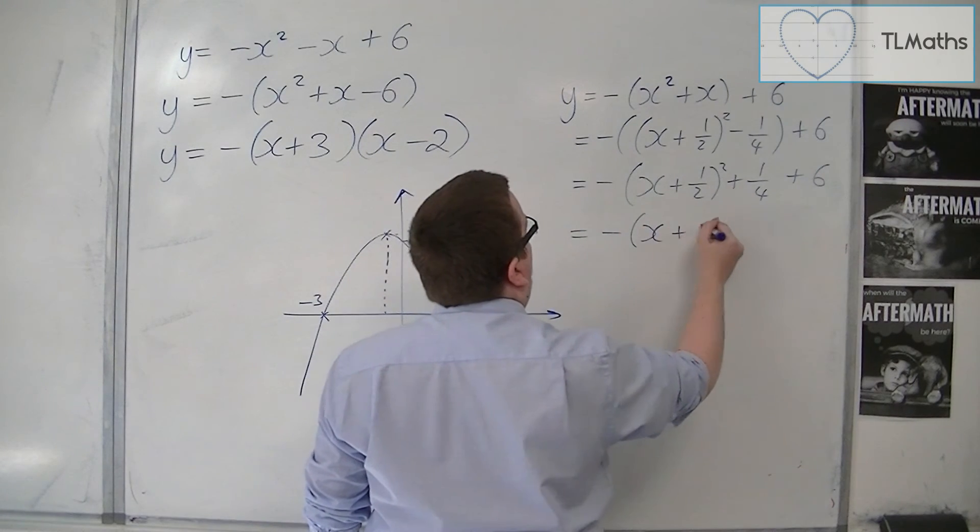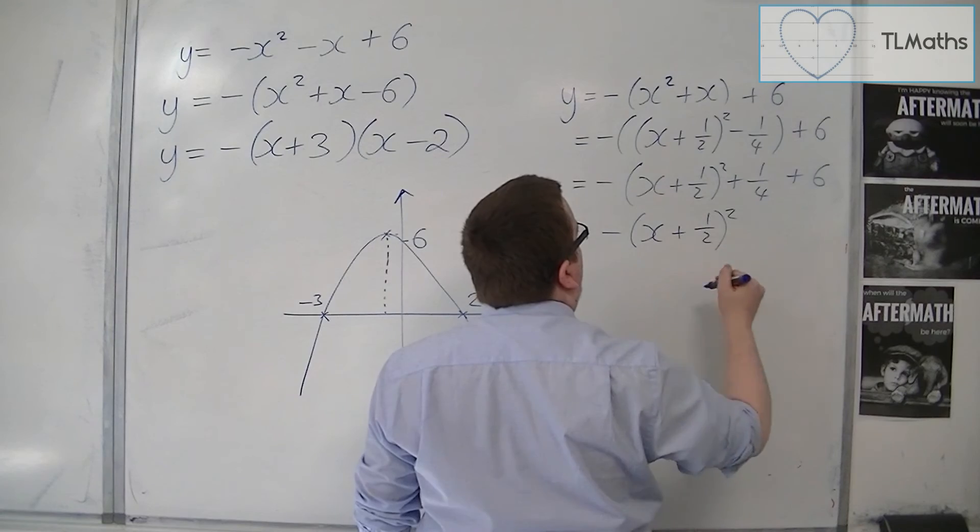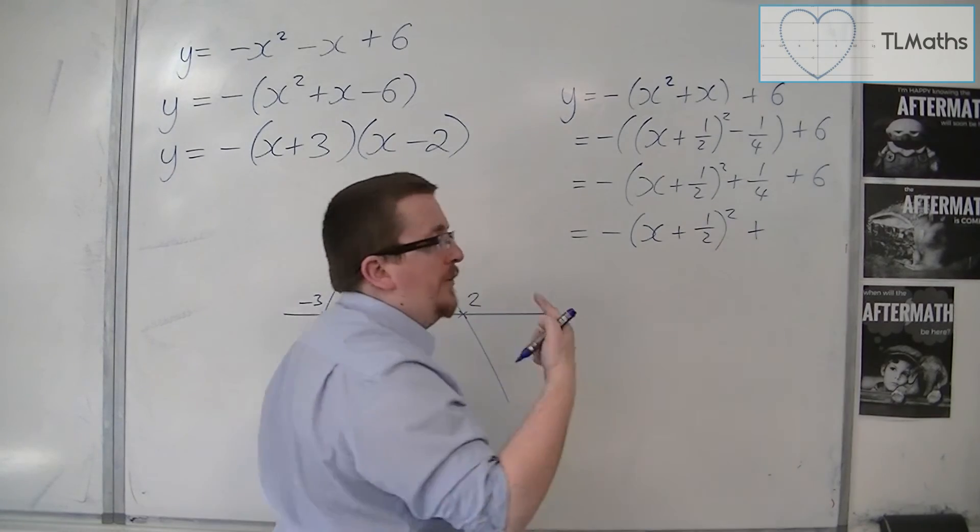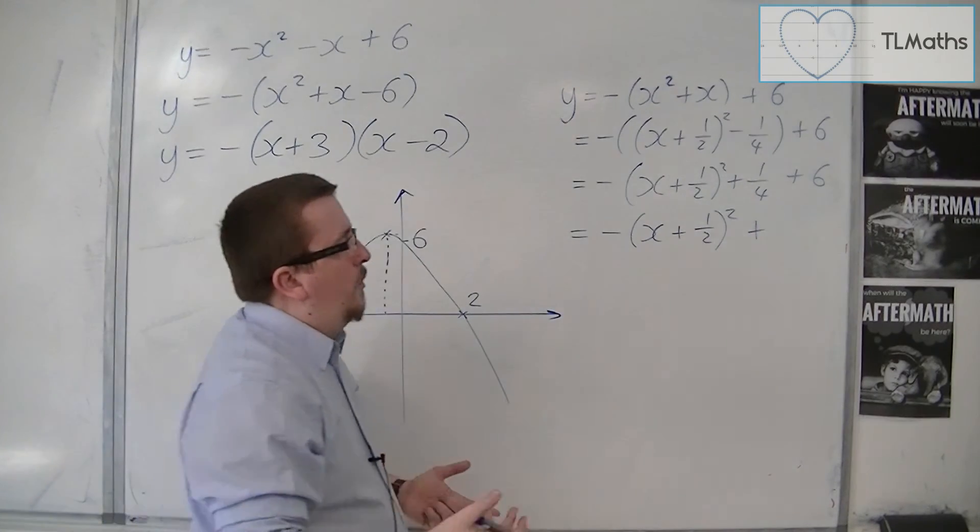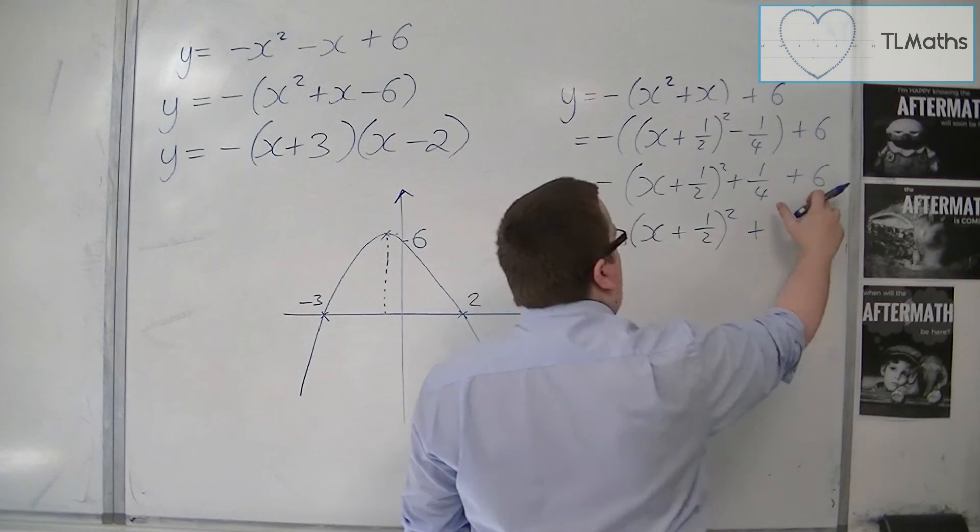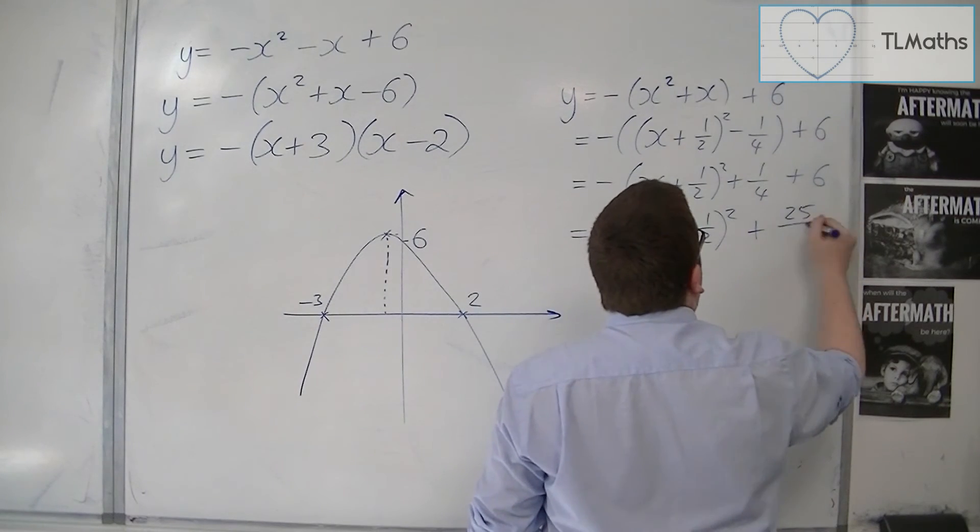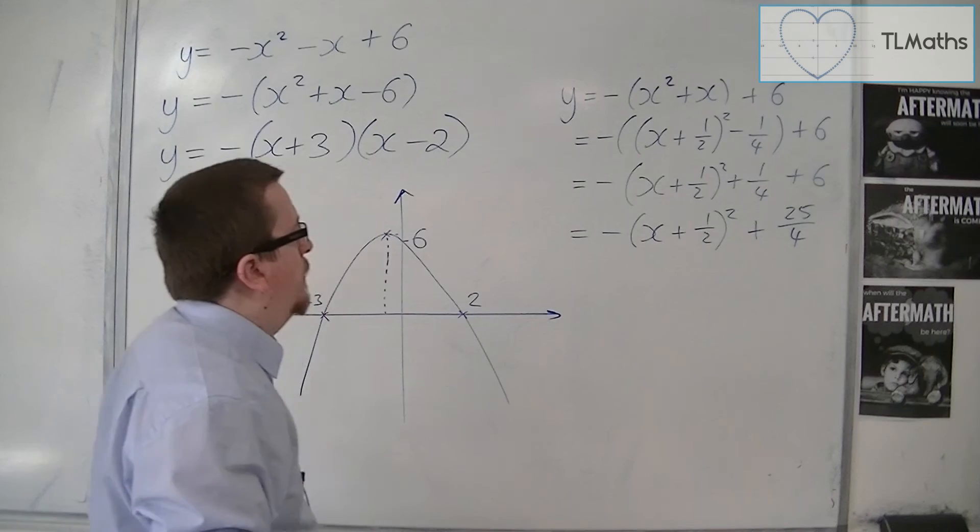So minus x plus a half squared, plus 6 and a quarter, or you could write this as 25 quarters.